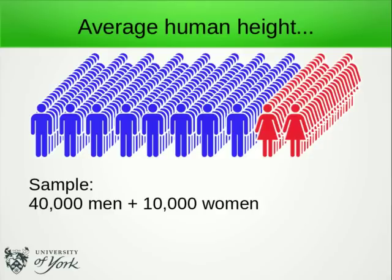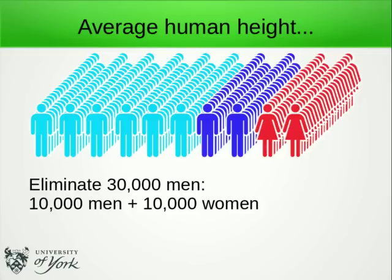Suppose we want to know the average height of human adults. We take a large sample of people — say 50,000 — and calculate the average height. But if we then discover that our sample consisted of 40,000 men and only 10,000 women, we might worry that we're not going to get a good average, because men are on average a bit taller than women. One thing we could do is throw away 30,000 observations, leaving 10,000 men and 10,000 women, and that will actually lead to a better estimate of the average height of a human adult.